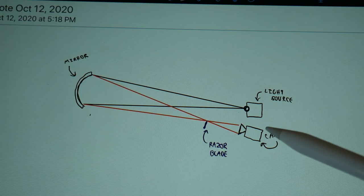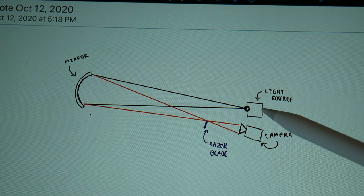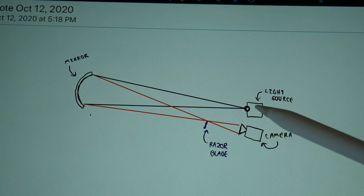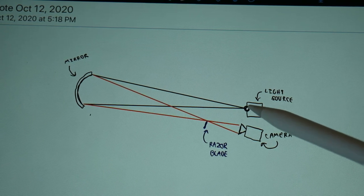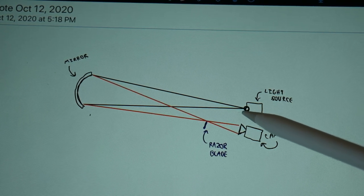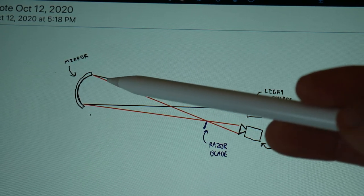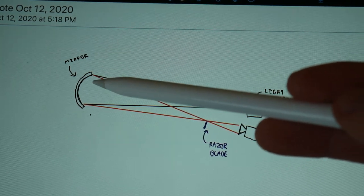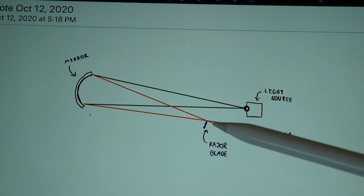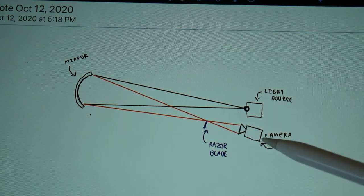So let's get started. This is a basic Schlieren Photography setup. Here we have the point light source, and this is a very special light source because it's pretty bright, and it also has a very small hole that lets the light out. The light's then going to come out, be reflected by the parabolic mirror from the telescope, and because it's a parabolic mirror, it's going to be reflected to a focal point before it hits the camera.